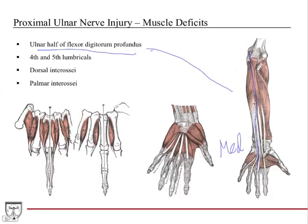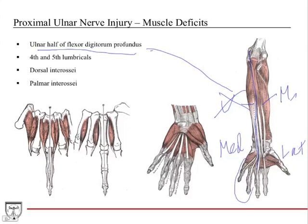As a result of the ulnar nerve injury, you're also going to lose the fourth and fifth lumbricals. Additionally, you lose the dorsal interossei and palmar interossei, which are also ulnar nerve. So you've lost these three sets of muscles. The interossei are different from the lumbricals in that they are all innervated by the same nerve — the ulnar nerve. So if you knock out the ulnar nerve, you're going to lose interossei function on all four fingers.